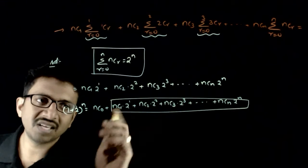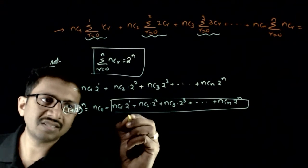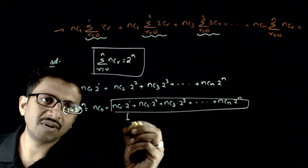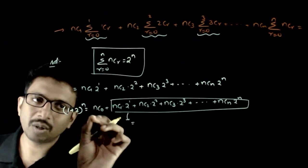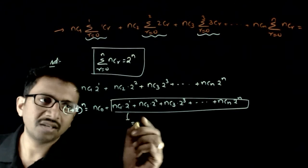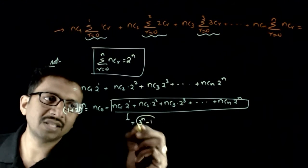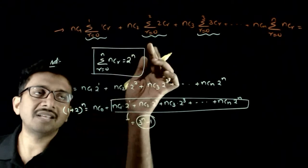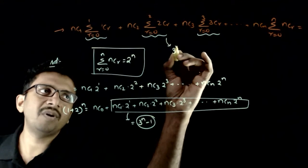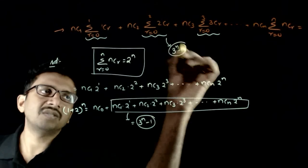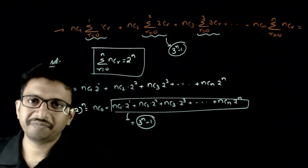So this is equal to 3 power n minus NC0, which is 1. Therefore, 3 power n minus 1 is the answer to this question. Thank you.